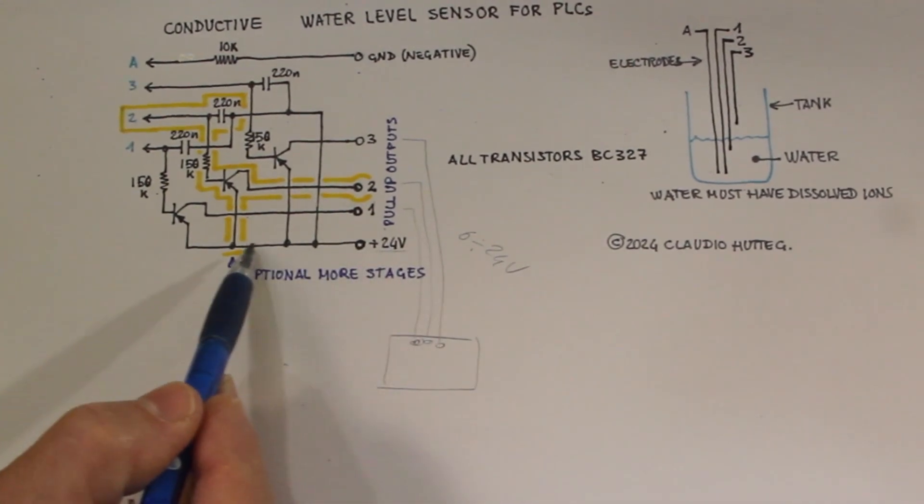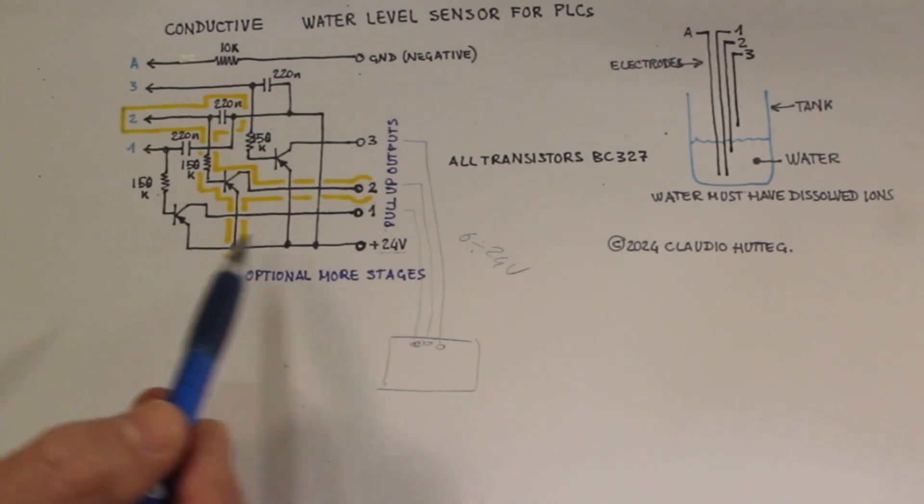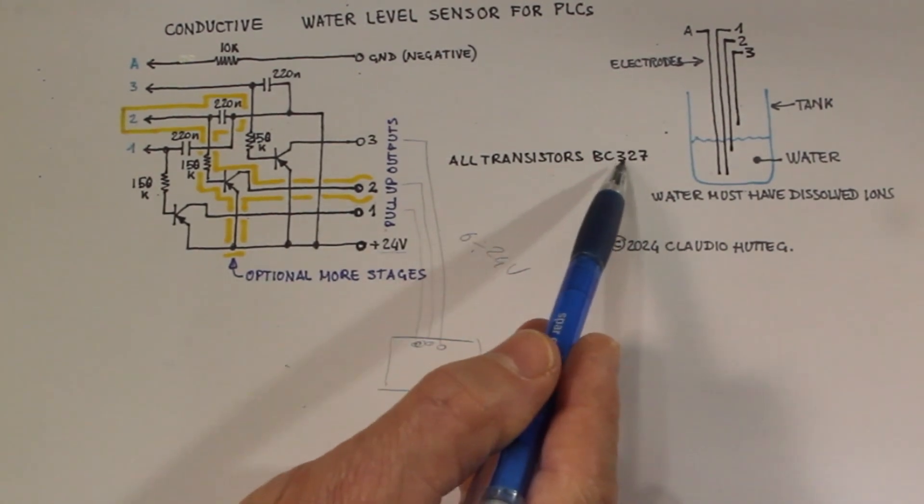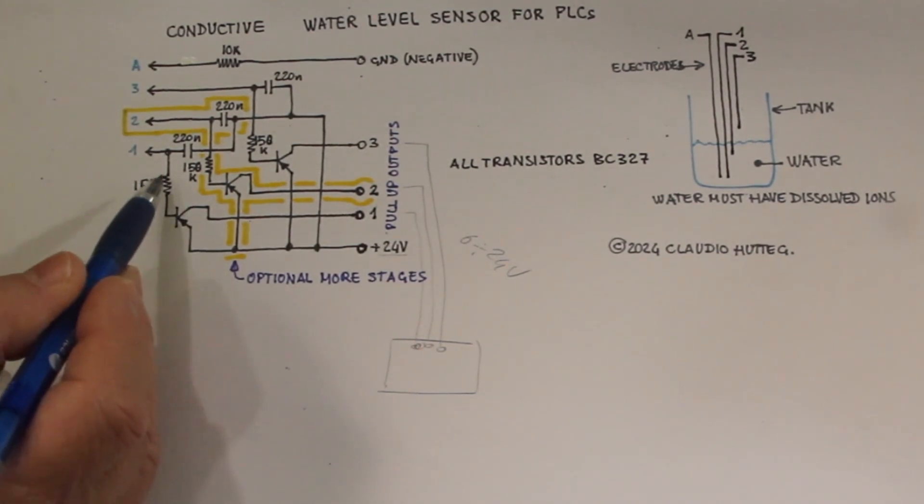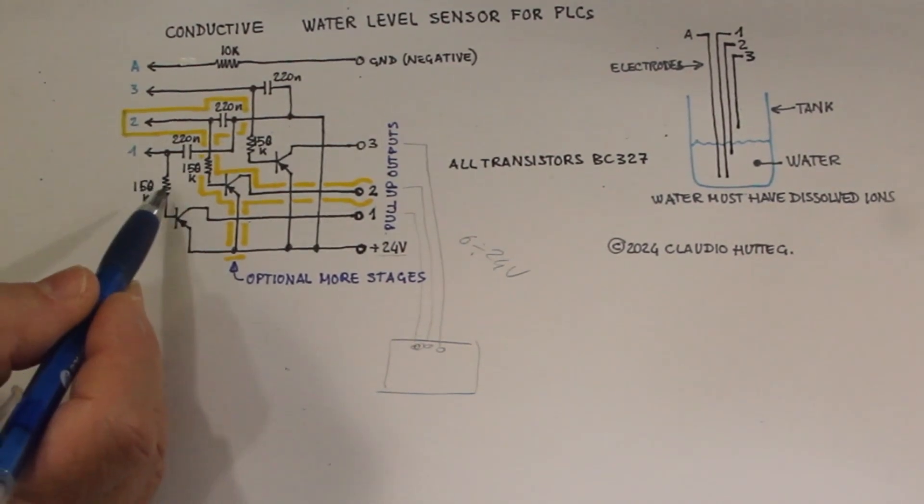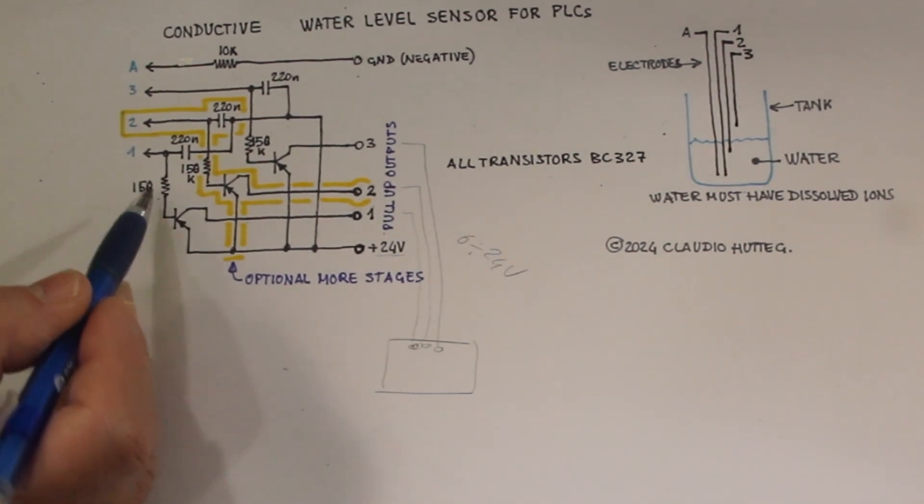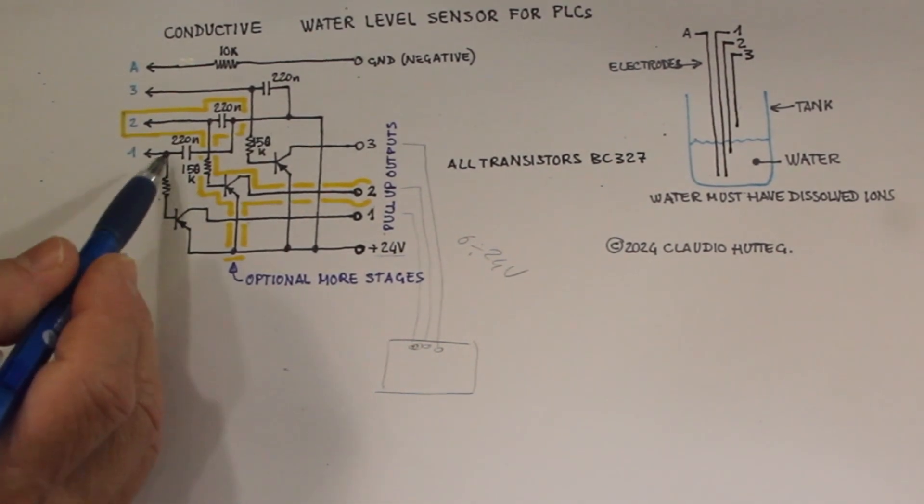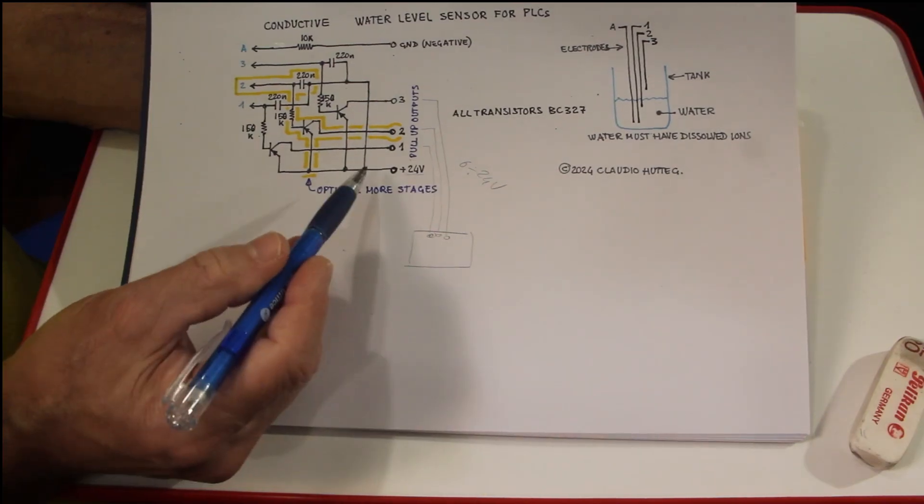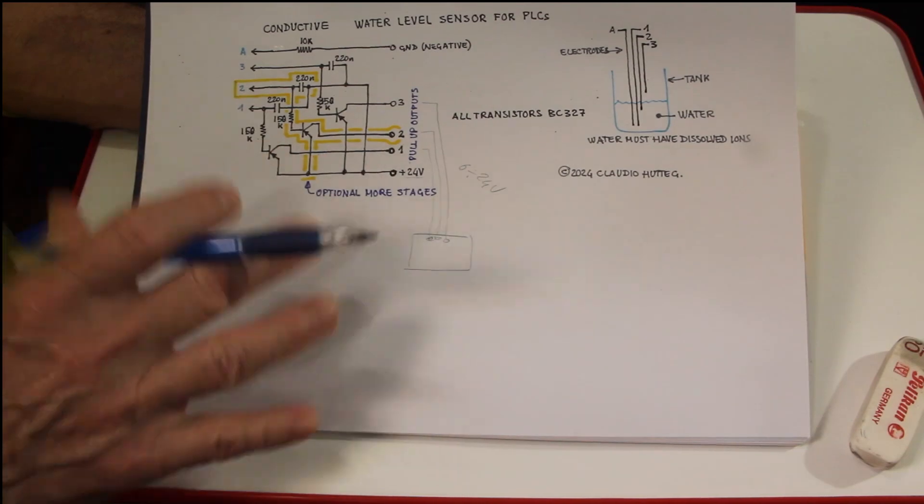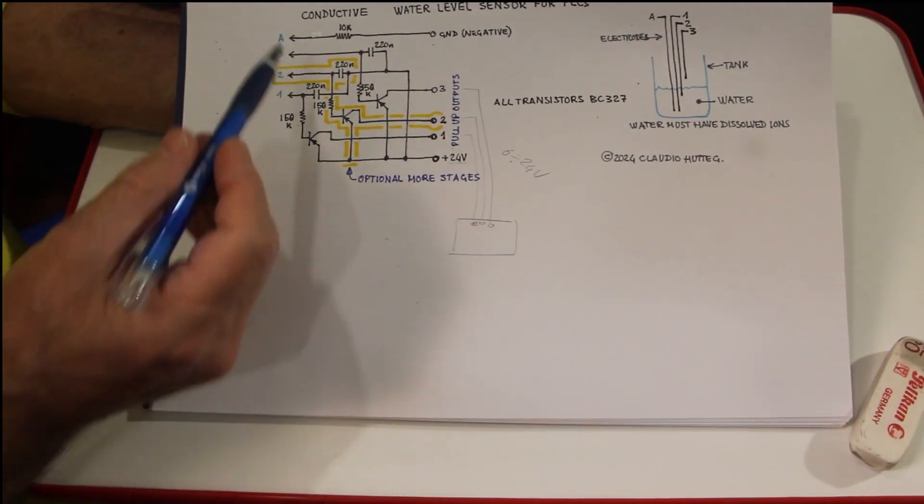And here we have PNP transistors, so BC327. And the transistors are connected, the base of the transistors, the bases of the transistors are connected through this resistor, 150K resistor. And again, the same capacitor that goes to positive in this case, because it is mirrored in respect to the previous circuit.